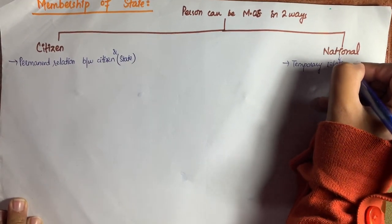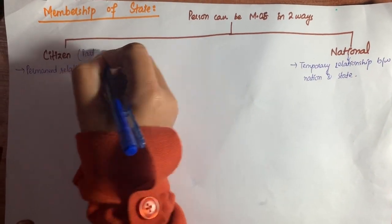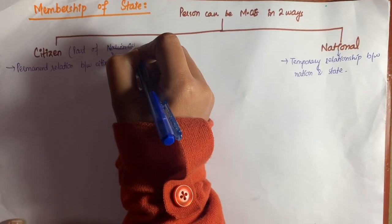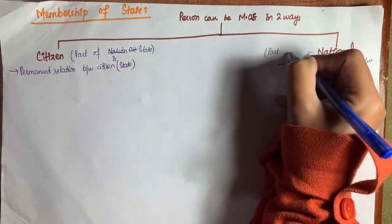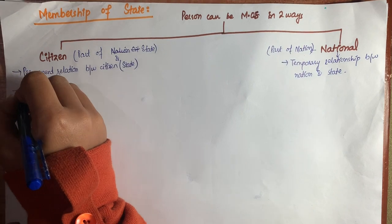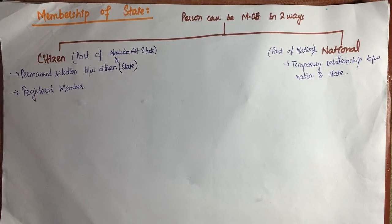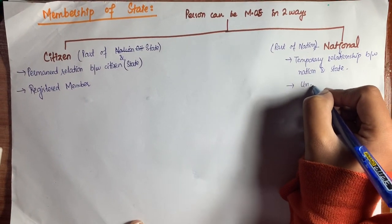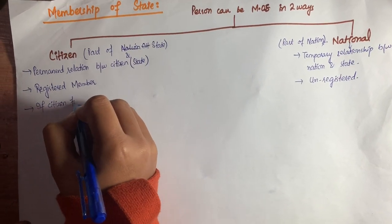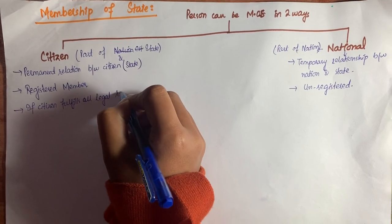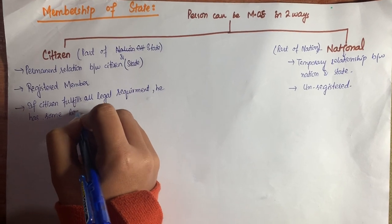Citizenship is the permanent relationship between a citizen and the state, while nationality is a temporary relationship between a nation and the state. A citizen is a part of the state, while a national is a part of a nation. Citizenship means a citizen is a registered member of state, while a national is an unregistered member.